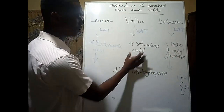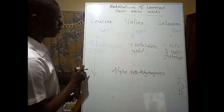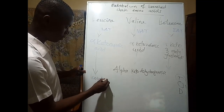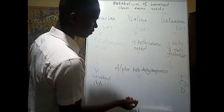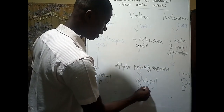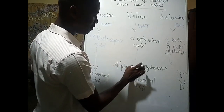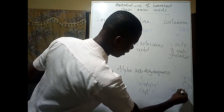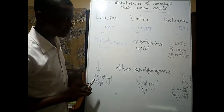When alpha-keto acid dehydrogenase acts on alpha-ketoisocaproic acid, we get a compound called isovaleryl-CoA. For alpha-ketovaleric acid, we get isobutyryl-CoA. And when it acts on alpha-keto-3-methylglutamate, we get 3-methylbutyryl-CoA.